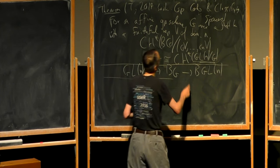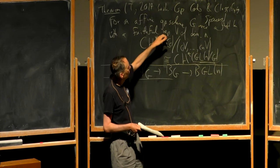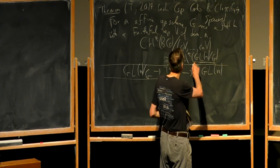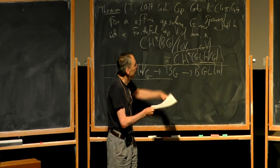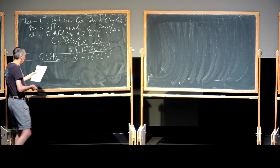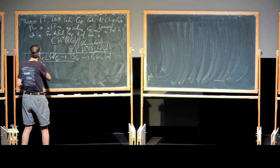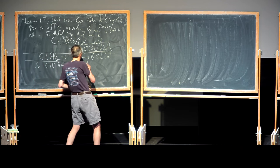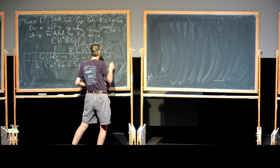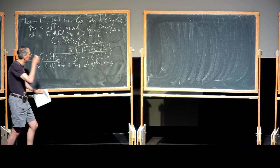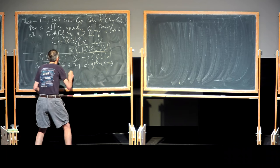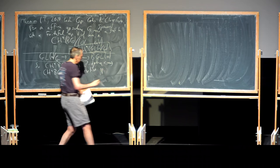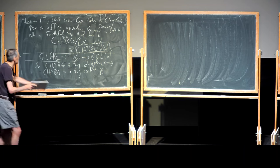One way to read this is that it implies that the Chow ring of any group is always generated by the Chern classes of any one faithful representation together with some classes in low degrees, because GLN mod G is a finite-dimensional variety with Chow groups in only finitely many degrees. So Chow-star BG is a finitely generated algebra over the integers if and only if, for every individual degree, it's a finitely generated abelian group. Somehow the ring structure is kind of under control, but additively it's a bit mysterious.